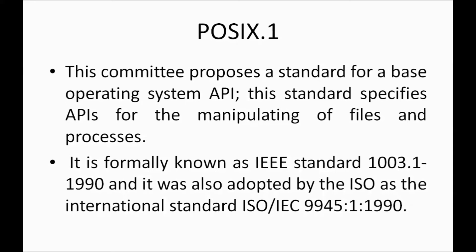POSIX.1 was formerly known as IEEE Standard 1003.1-1990, meaning it was introduced in 1990. It was also adopted by ISO — the International Standards Organization — under the name IEC 9945. In simple words, POSIX.1 defines APIs for file manipulation and process manipulation, such as creating or deleting processes.